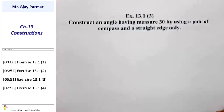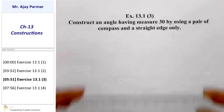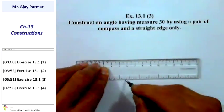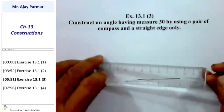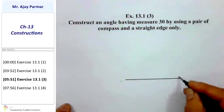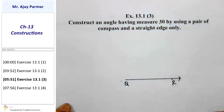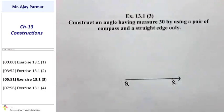Exercise 13.1, question number 3. We are expected to draw 30° without the help of the protractor. Same as the previous case, we shall first draw a ray — let us label it as ray QR. I am expected to draw 30°, so first of all we draw the mother of all angles, that is 60°.